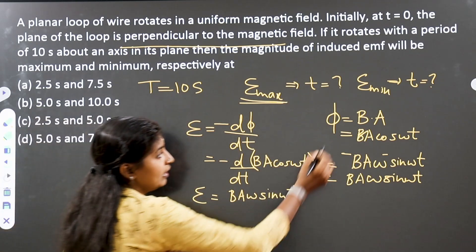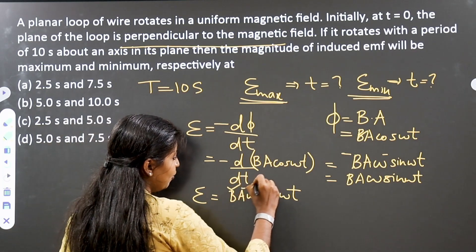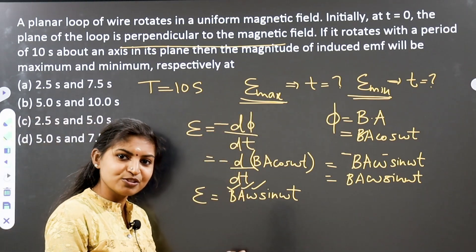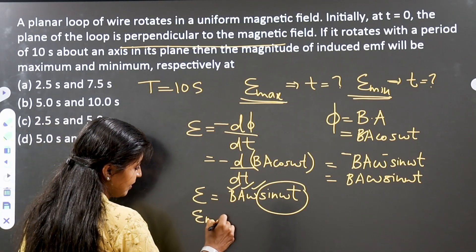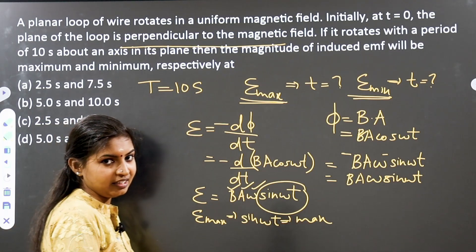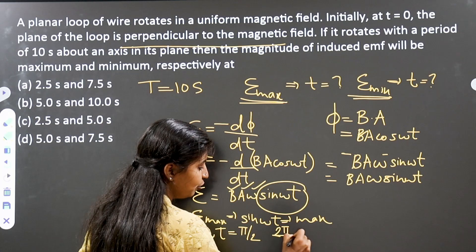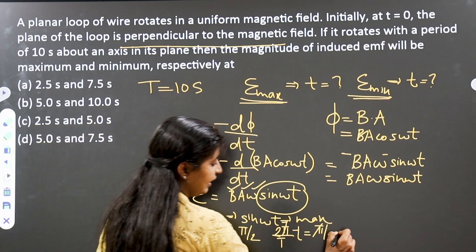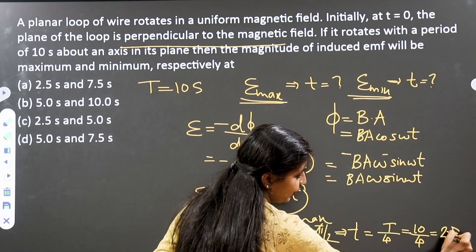Induced EMF is maximum when sin(ωt) is maximum, i.e., sin(ωt) = 1. B, A, and ω are all constants. So E_max occurs when ωt = π/2. Since ω equals 2π/T, we get t = T/4. That means t = 10/4 = 2.5 seconds. That is the first case — we eliminate options B and D.